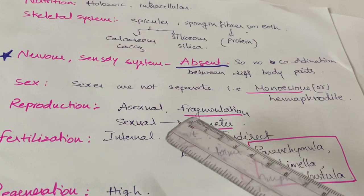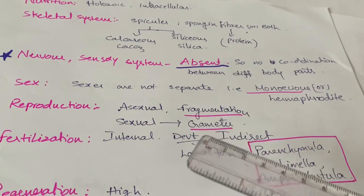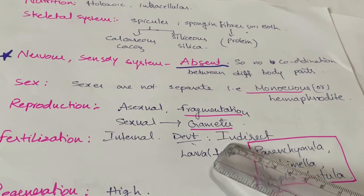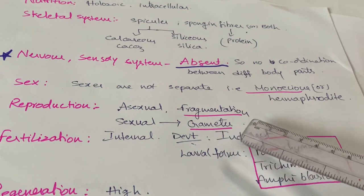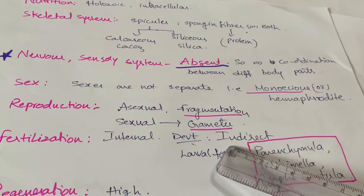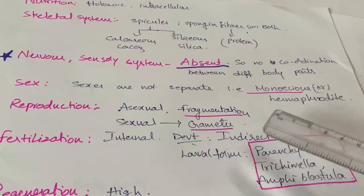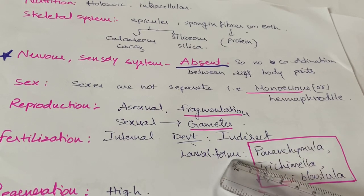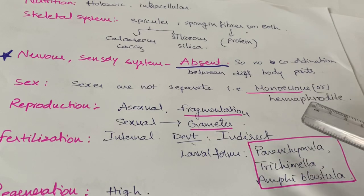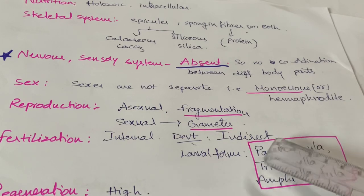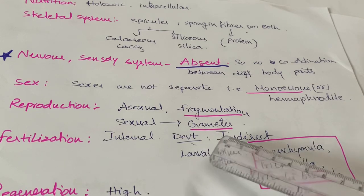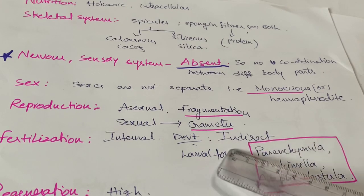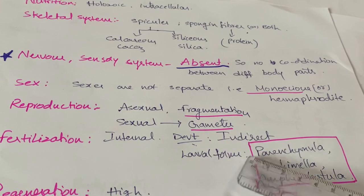Holoblastic means the zygote divides completely. Development is indirect — from the zygote, larval forms are produced, then metamorphosis occurs and the adult is formed. In indirect development, a larval form exists.